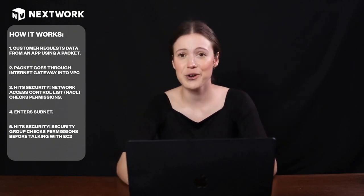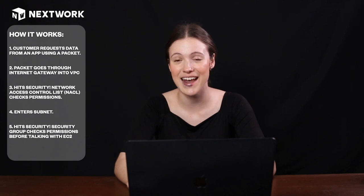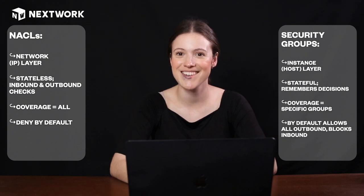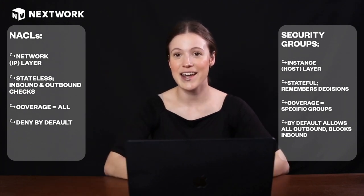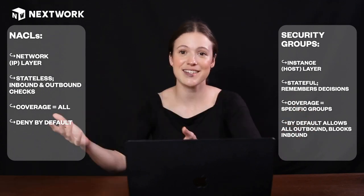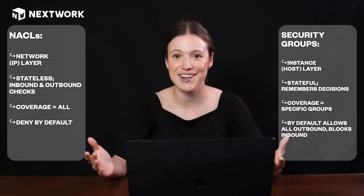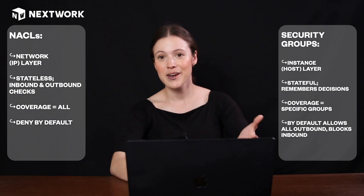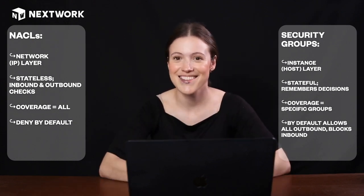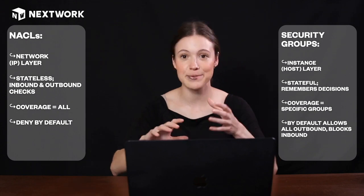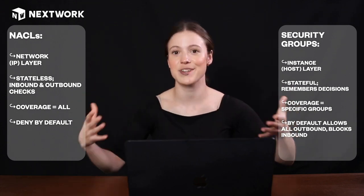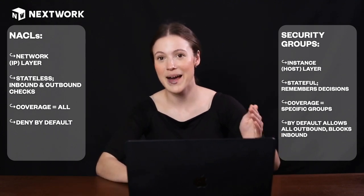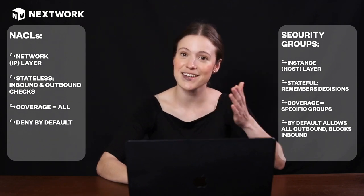So what's the real difference between access lists and security groups? Network access control lists operate at the network layer — they check a packet's source and destination IP address, port ranges, protocols, and things like that. Security groups operate at more of an instance layer, determining who can enter and exit a specific server, whereas the access control list covers the entire network. Access control lists are also stateless, meaning they check both packets coming in and packets going out.